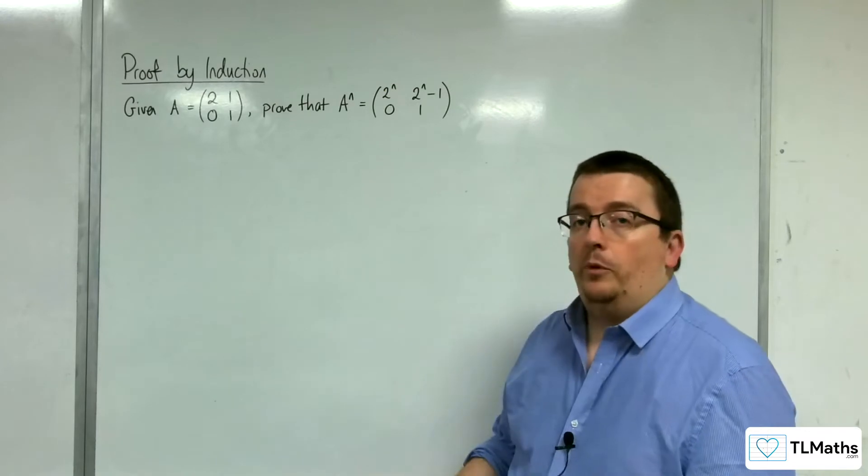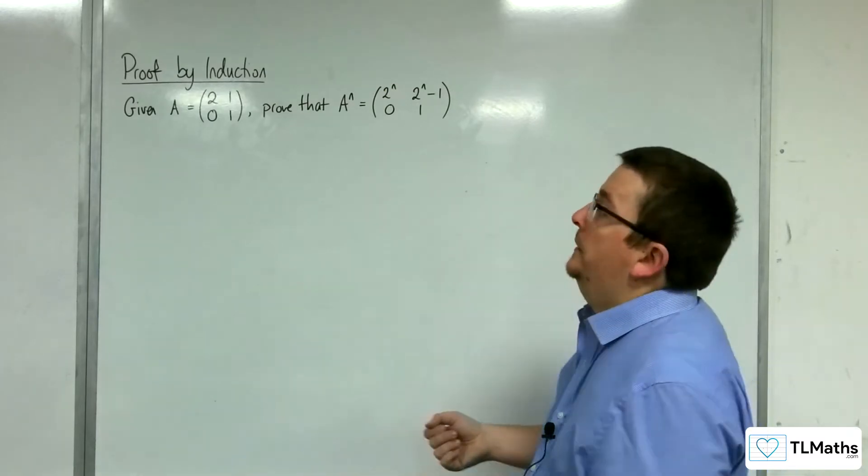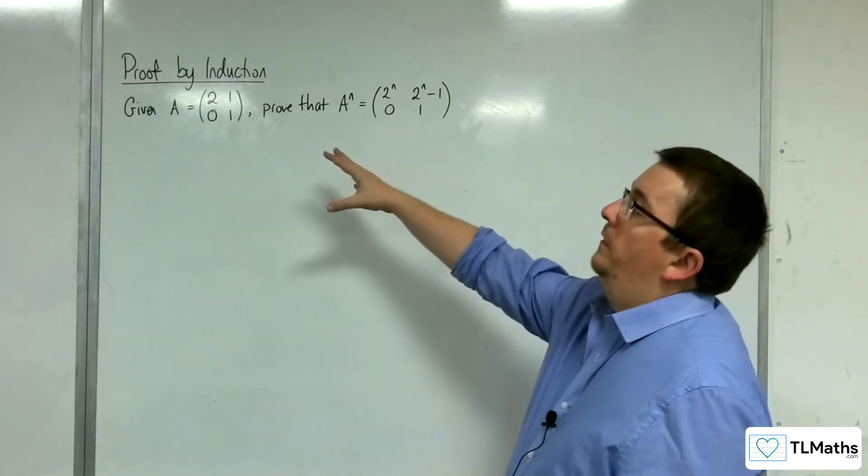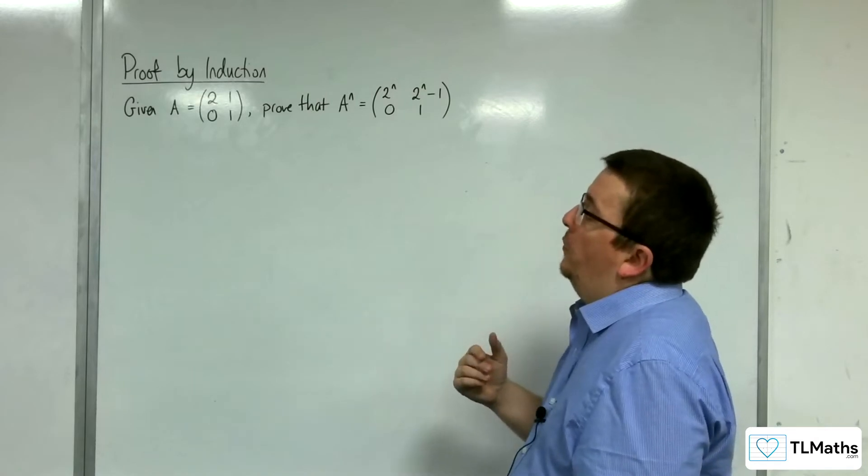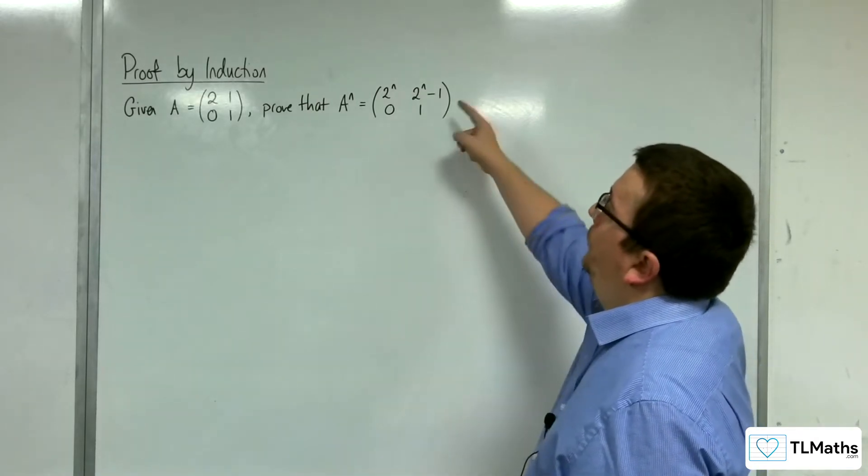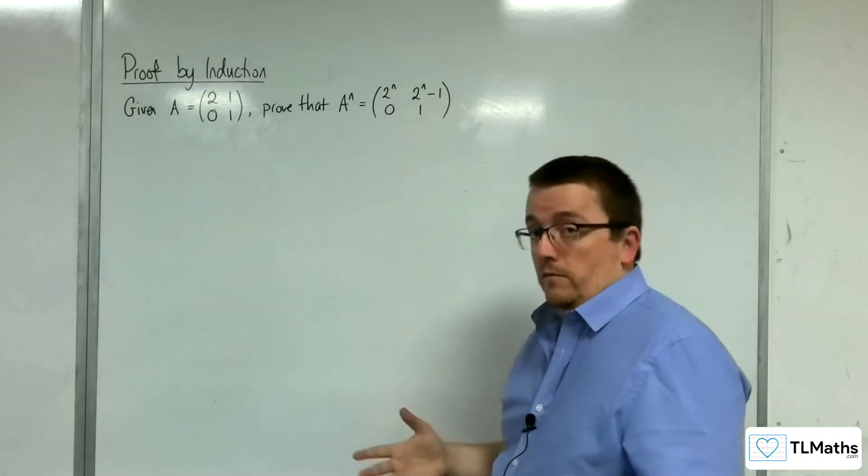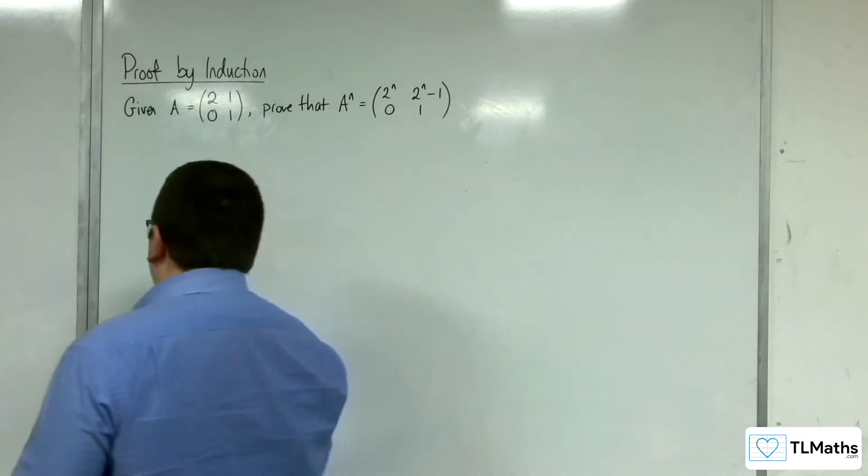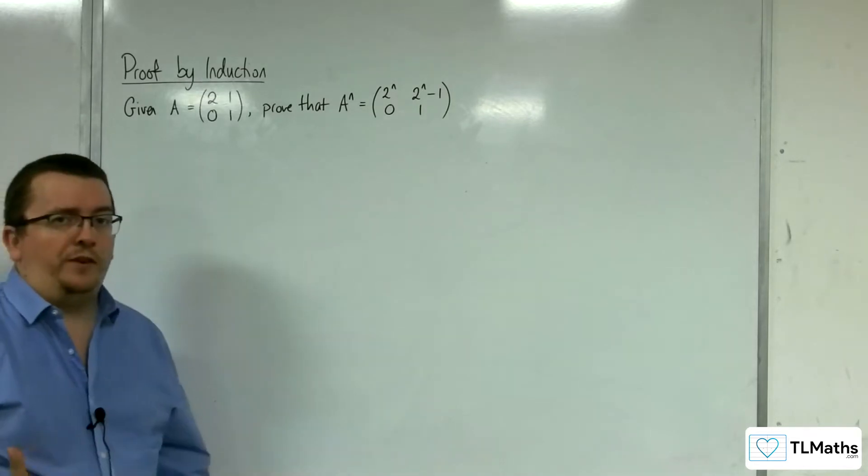We're now going to look at some examples that involve matrices. Given that A is [2, 1; 0, 1], we need to prove that A^n is [2^n, 2^n - 1; 0, 1]. This looks quite scary at the start.